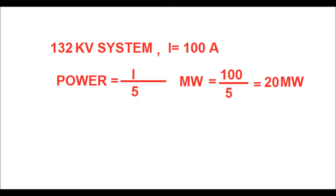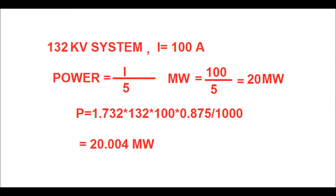For a 132 kV system, if current I = 100 amperes, then to get the power in megawatts you have to divide the current by a factor of 5, giving 100 divided by 5 equal to 20 megawatts. Using the same formula: P = 1.732 × 132 × 100 × 0.875...